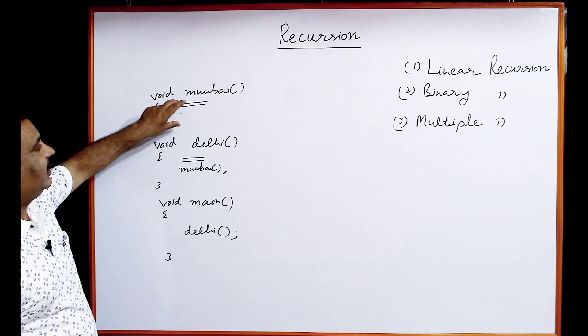But in recursion, we call the same function. Suppose the function is Delhi and there are some statements before and after the function call. Control will come back here, then again those statements will execute, then it will transfer again, and so on. This is called infinite recursion — the instructions will be printed infinite times, and eventually an error will occur.